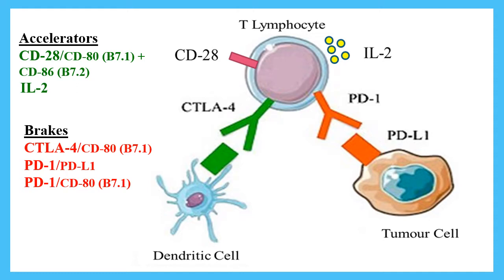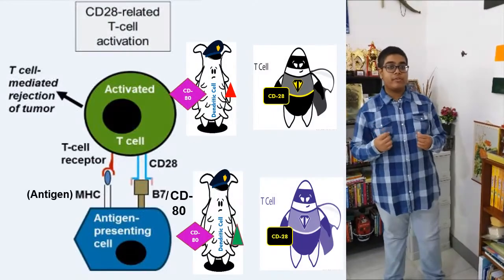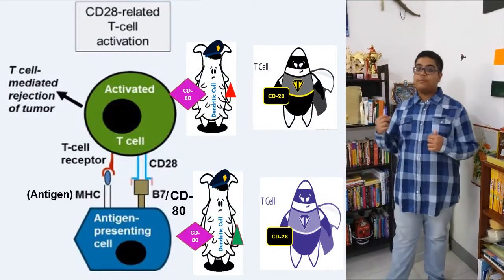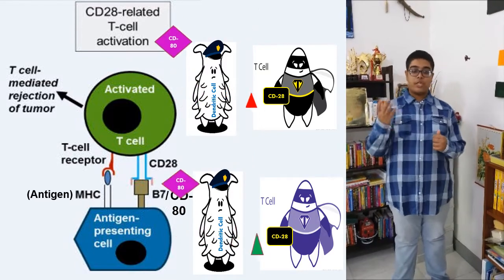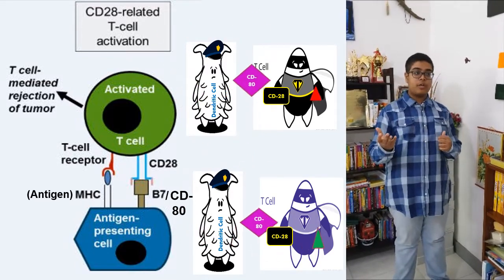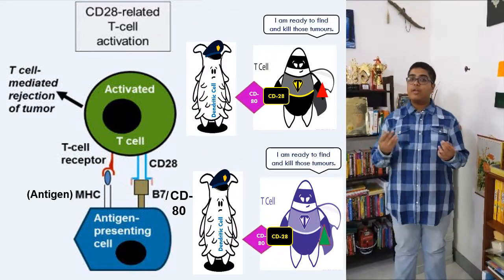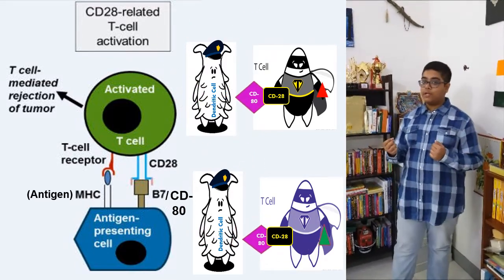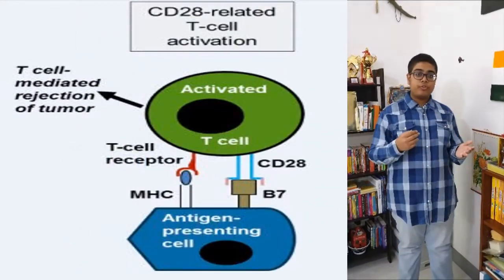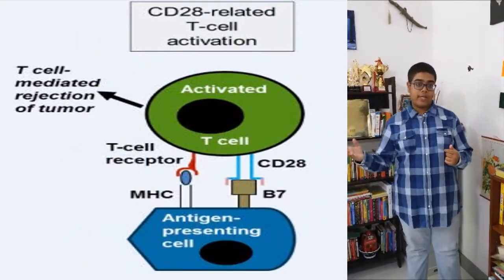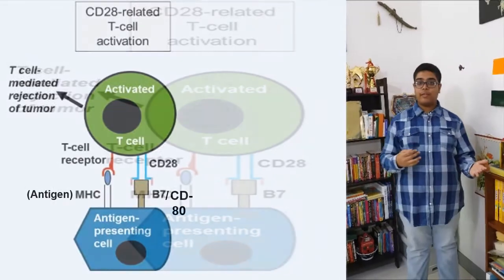When these checkpoints are turned on, the T cells are inactivated and can no longer destroy abnormal cells. To activate T cells, antigen presenting cells need to simultaneously stimulate a special T cell receptor along with accelerator molecules like CD28, which it does by presenting the antigen along with co-stimulatory molecules such as CD80 and CD86.